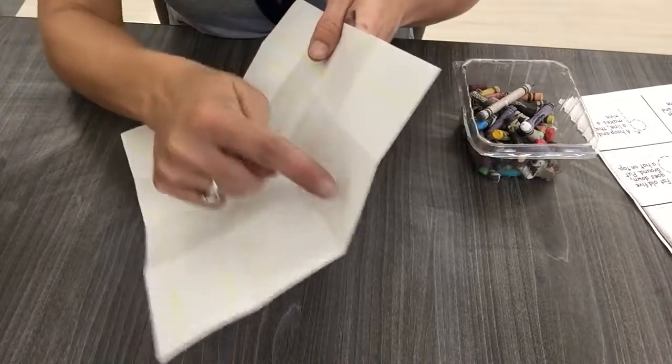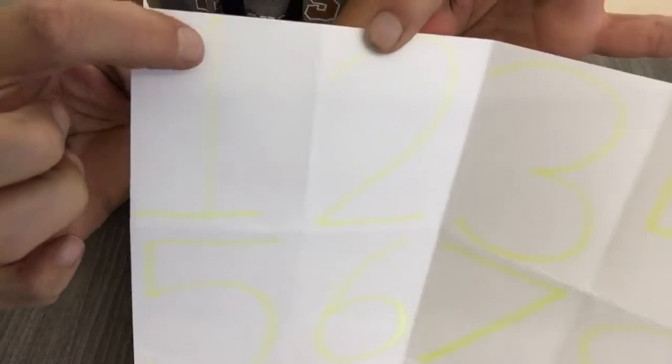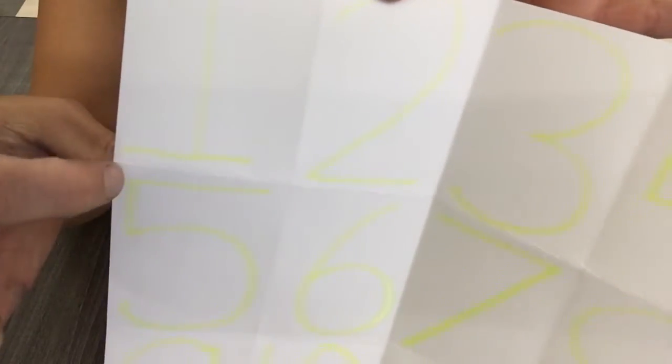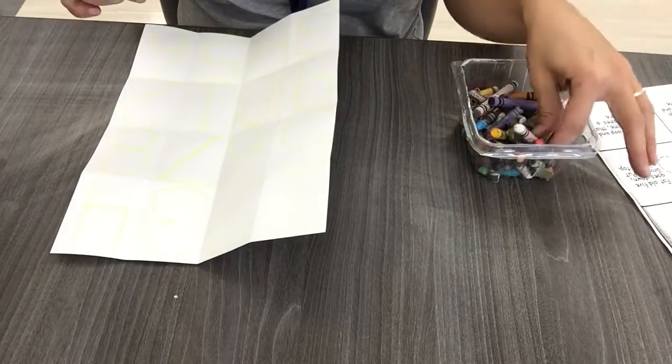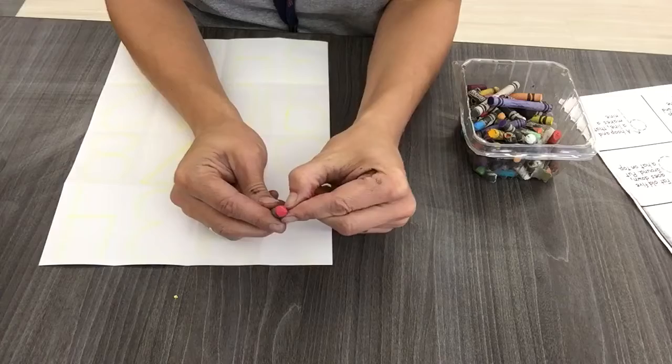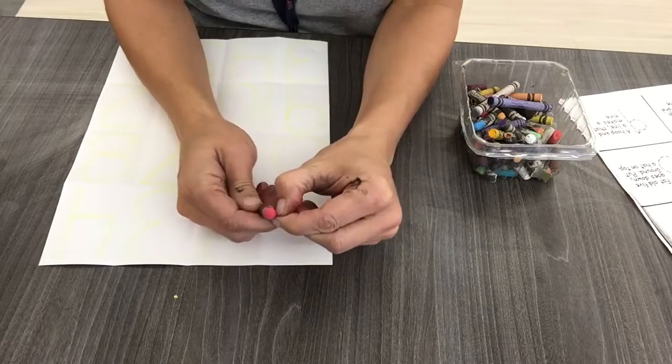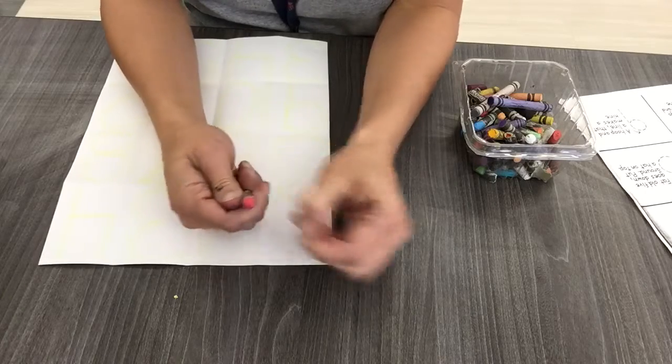Inside each of these rectangles drawn in really light yellow, you will find a number. And your job today is to use your artist muscles. You need to press hard with your crayons. You're gonna go over the yellow you see.